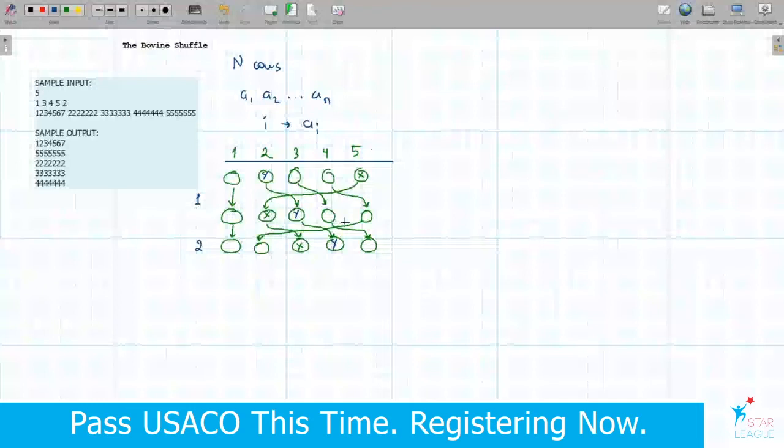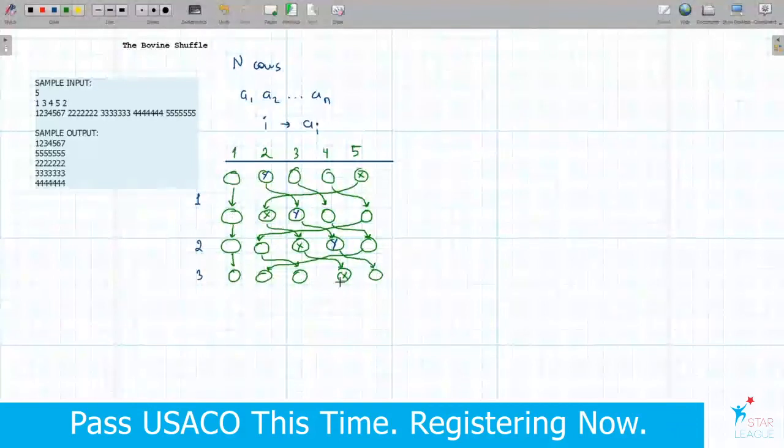And we repeat these shuffles three times, so they will again change their positions. Let's also draw them here for this example. And cow 1 stays in place, cow in second position goes to 3, from 3 goes to 4, 4 goes to 5, and 5 goes to 2. So actually, in the end, X will be in position 4, and Y will be in position 5.